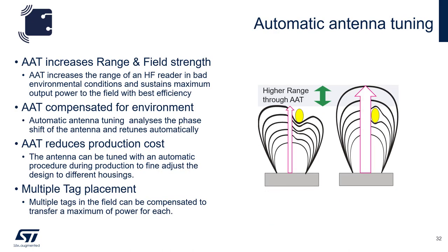Another feature of the 3911B is automatic antenna tuning. Automatic antenna tuning increases the range of an HF reader and sustains maximum power to the field with the best efficiency. AAT can be used to compensate for environmental conditions that cause phase or amplitude shifts when operating. AAT can also reduce production costs by compensating for variances of components that are in the matching circuit, and it can also adjust to different housings that the antenna is put in.